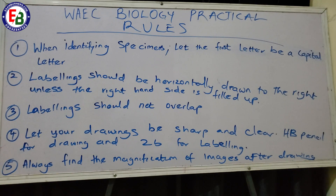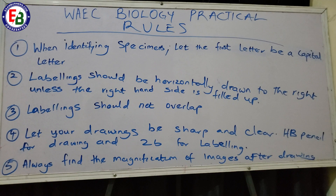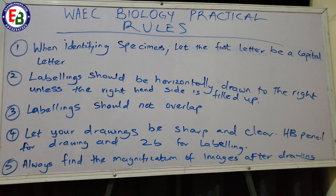When identifying a specimen, let the first letter be a capital letter. So if specimen A is named, say, 'Xylem,' the first letter X should be capitalized. Also, when you are told to identify a specimen by its zoological or biological name — for example, Agama agama — write the first word with a capital letter, the second word in lowercase, and underline both, or write them in italics. Make sure you know how to write botanical and zoological names correctly.